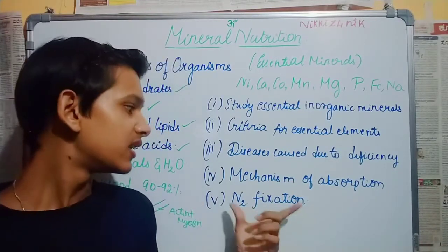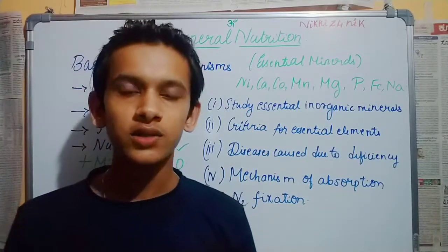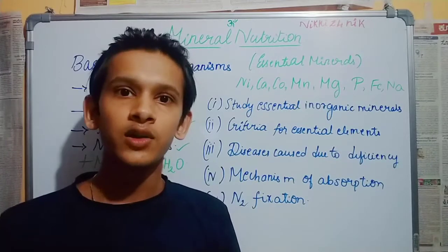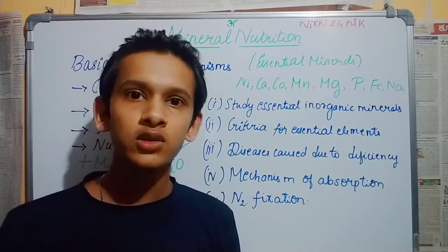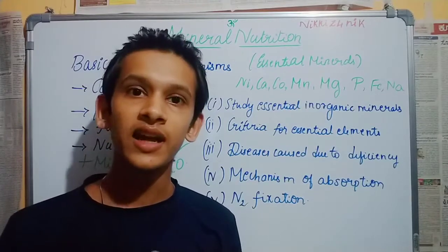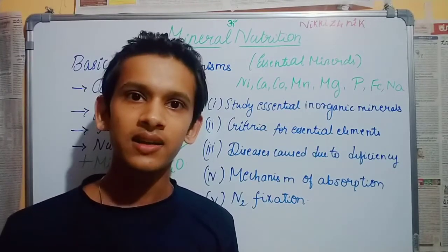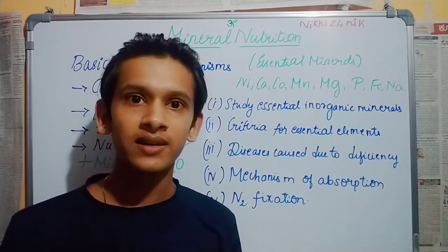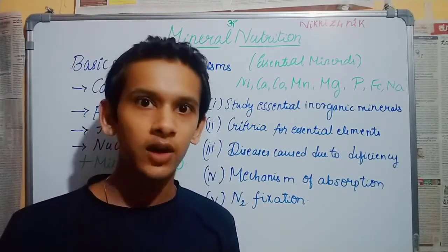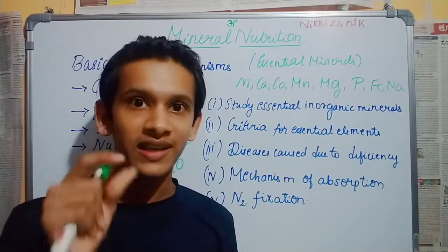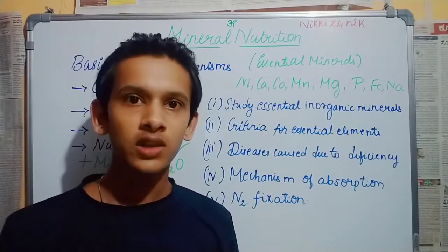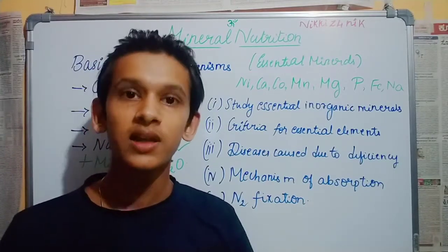And at last is nitrogen fixation. This is why we need nitrogen fixation — nitrogen is a very important component for plants. You can use nitrogen-fixing bacteria for nitrogen fixation in plants. For example, Nostoc and Anabaena. We will study biological classification. Let's study nitrogen fixation. I hope this introduction video was helpful. We will continue in this series of lectures.